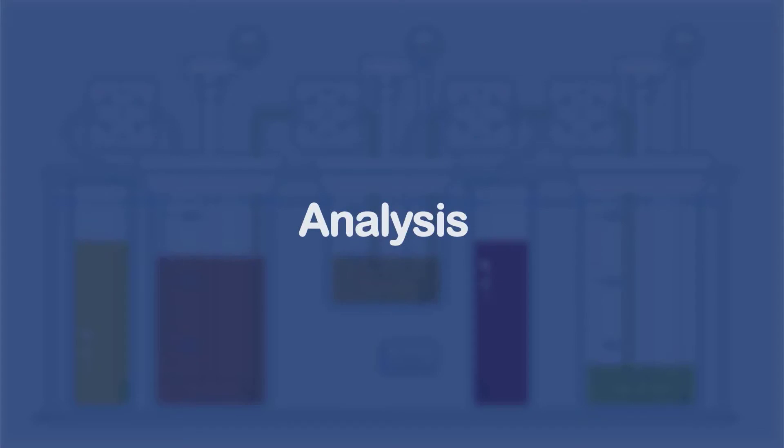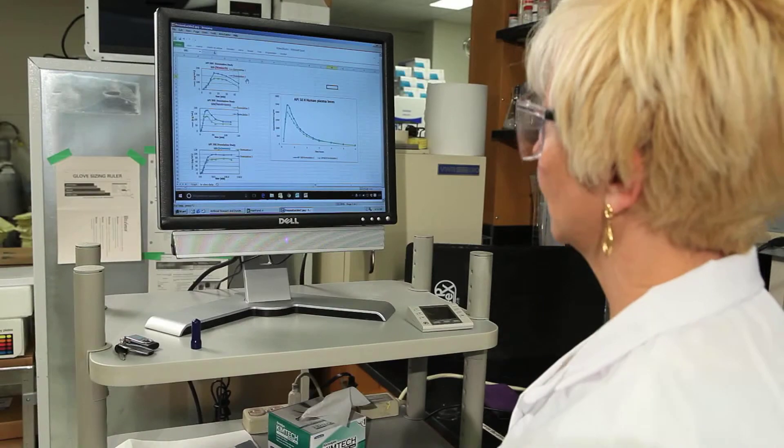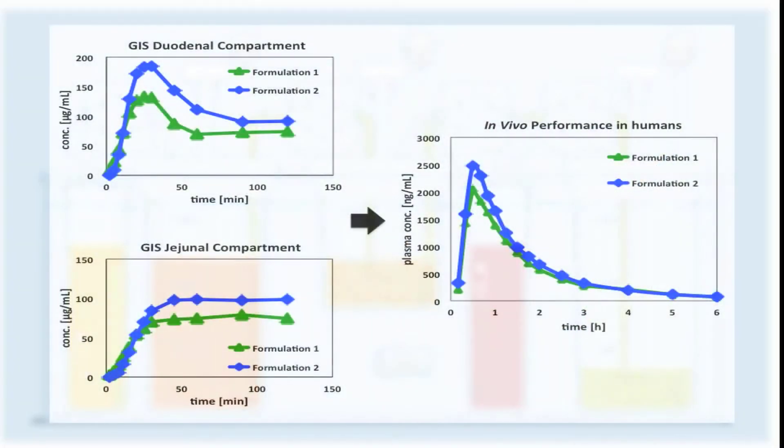The dissolved drug concentration profile in each chamber can be used to predict the in vivo performance of the drug product. Higher dissolved concentrations in the duodenal and jejunal chambers can be indicative of enhanced in vivo performance.